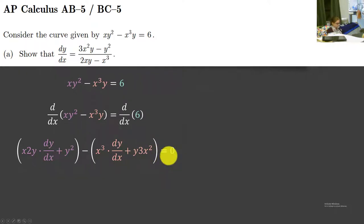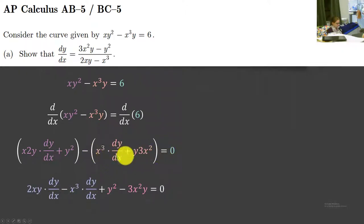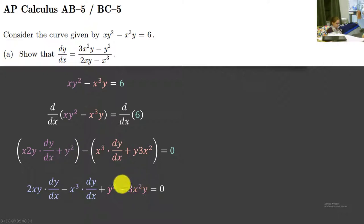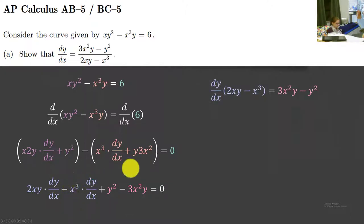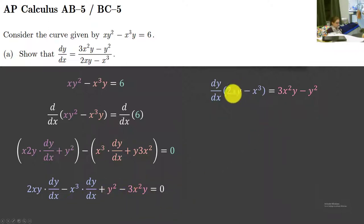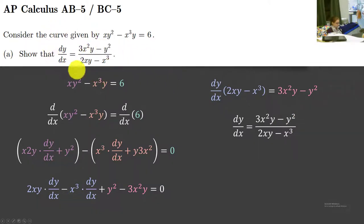Now, what we want to do is group together the dy/dx terms and the constants. Distribute the negative, then put the 2xy dy/dx and the negative x³ dy/dx next to each other, and group together the terms that don't have dy/dx. We move the non-dy/dx terms to the right side and factor out the dy/dx on the left side. Since both of these have a dy/dx, we can factor it out. We're left with 2xy minus x³ equals, and we add 3x²y to the other side and subtract y squared. Our last step is to divide, and we get 3x²y minus y² divided by 2xy minus x³, which is exactly what we wanted to show.